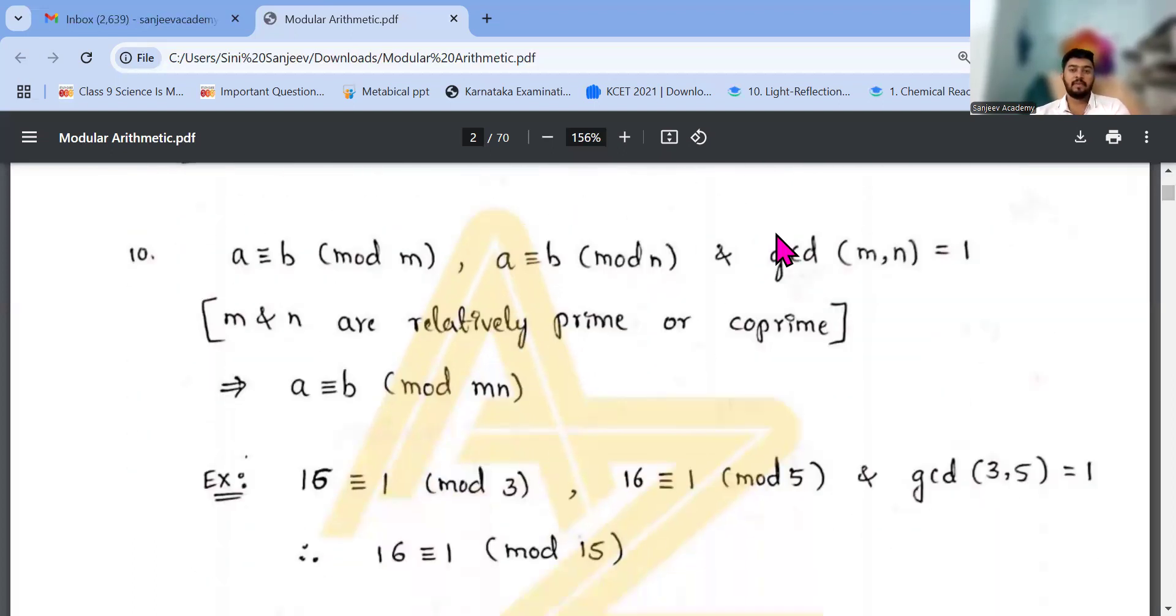Then coming to gcd of m comma n, relative prime or coprime. So those who don't know what is coprime, I will tell you in a nutshell. 8 and 15, are they prime numbers? No. But if I take the factors of 8, what is it? 2, 2, 2. 2 cube is 8. But if I take 15, 3 times 5 is 15, and 15 times 1. So what is the common factors between 8 and 15? Only 1 is the common factor. So those numbers are called coprime.